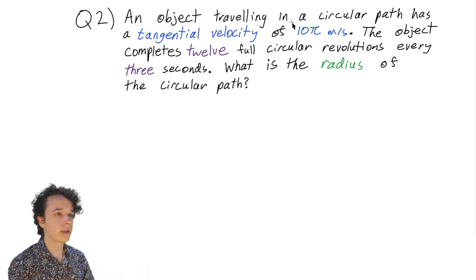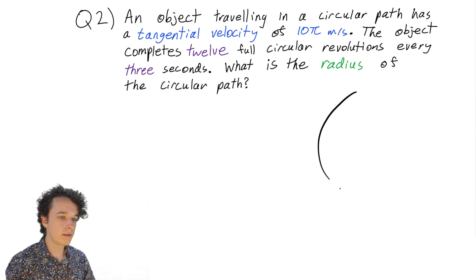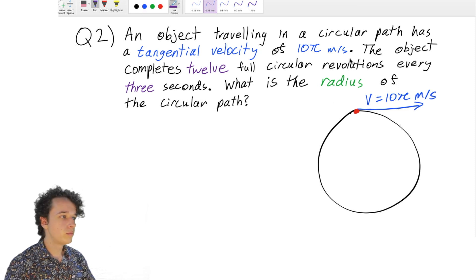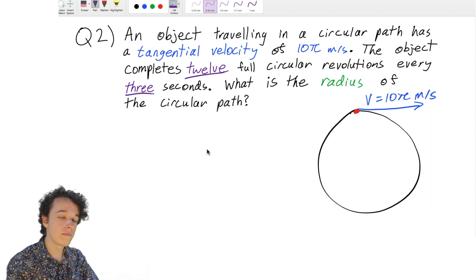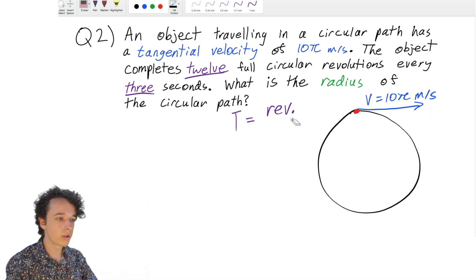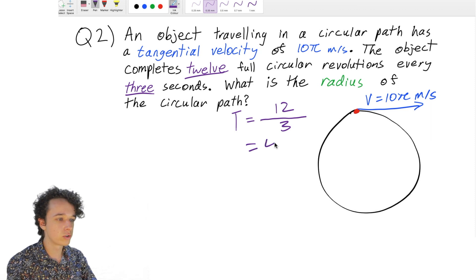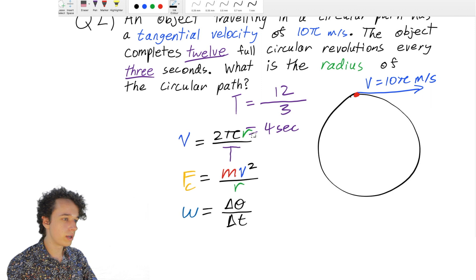Question 2: An object is traveling in a circular path with a tangential velocity of 10π meters per second. It completes 12 full circular revolutions every three seconds. We can derive the period from that: T = revolutions / time = 12 / 3 = 4 seconds. Now I'll paste the three equations and consider which to use.